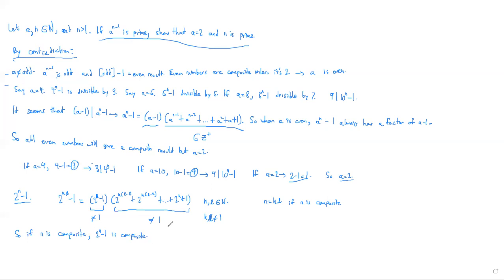So by proving all our things, in conclusion, we can say that if a to the n minus 1 is prime, a is 2 and n is prime. Now, we are done the proof. I'd like to make a final note, though.